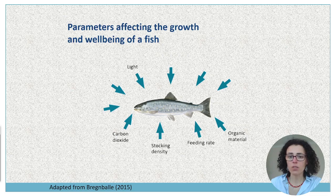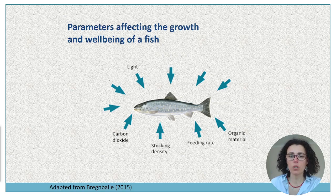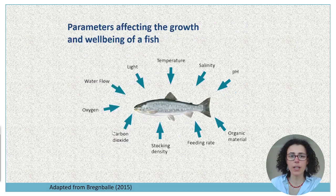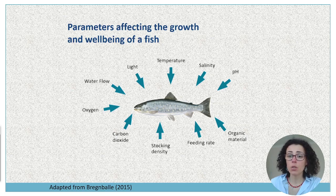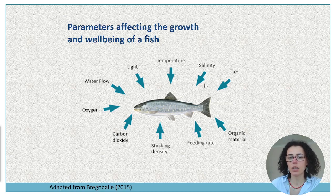The organic matter that you have in the system — you need to know the optimal feeding rate for the species at the life stage your species is at. The stocking density, which is very variable between species. The carbon dioxide in the system, and also all these other parameters: the oxygen, the water flow, and of course the light is important — not only the amount of light, as some species prefer to be in darker conditions, but also the duration of how many hours of light you have in the system. And then of course temperature, salinity, and pH are also very important.